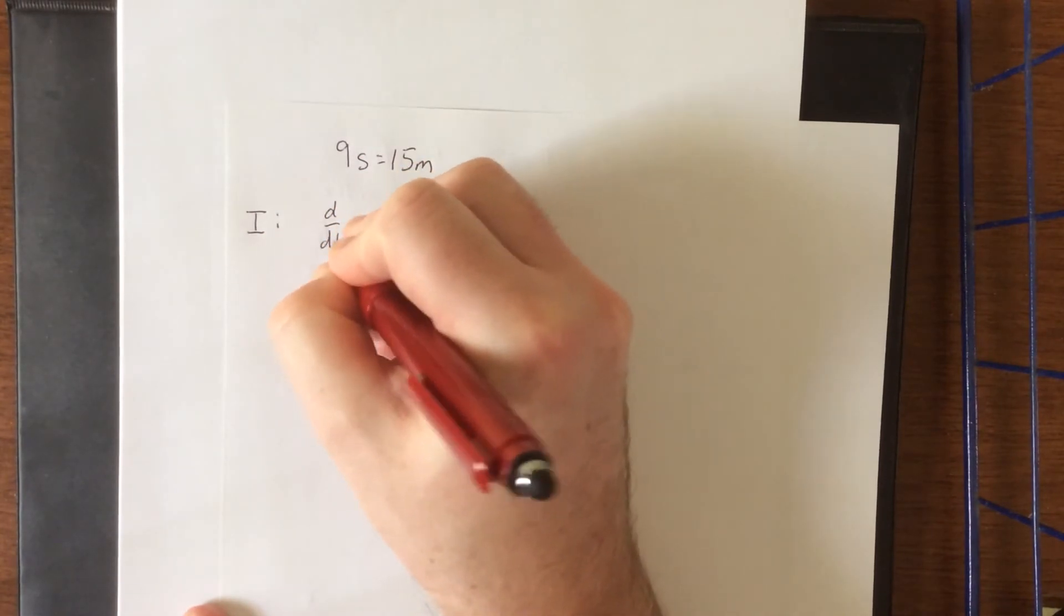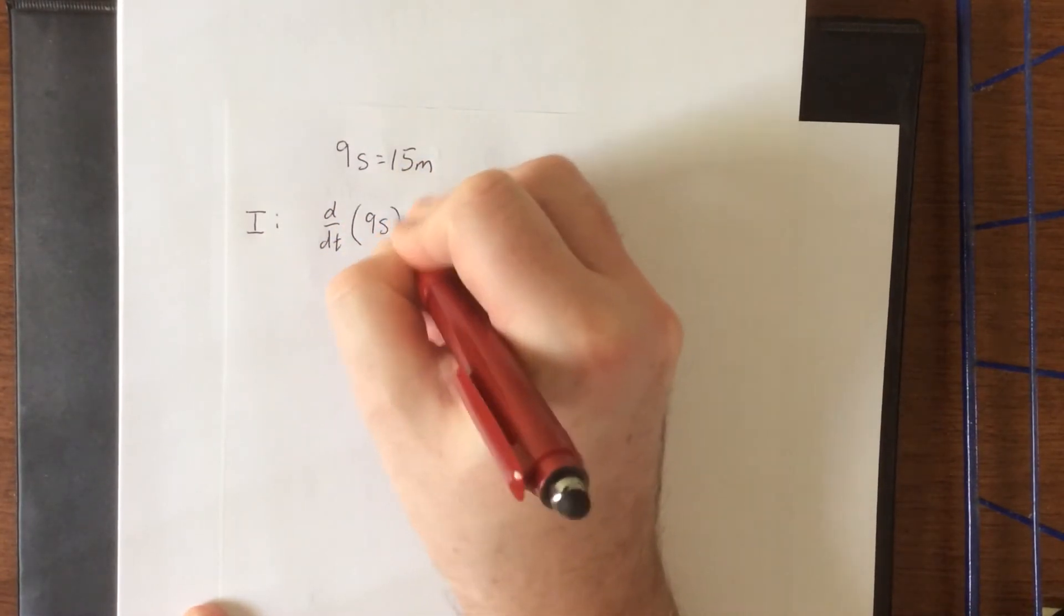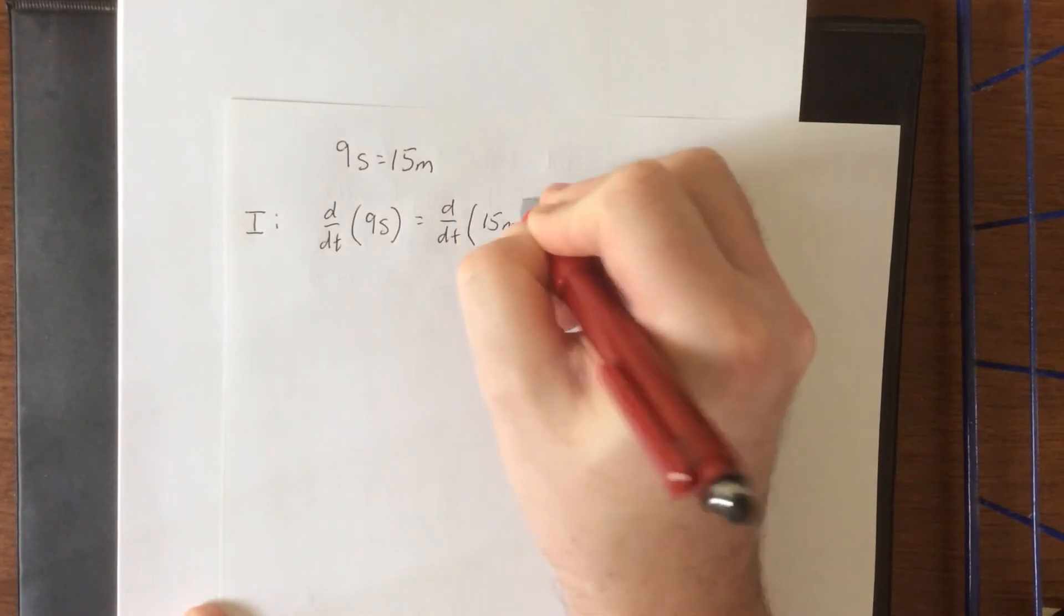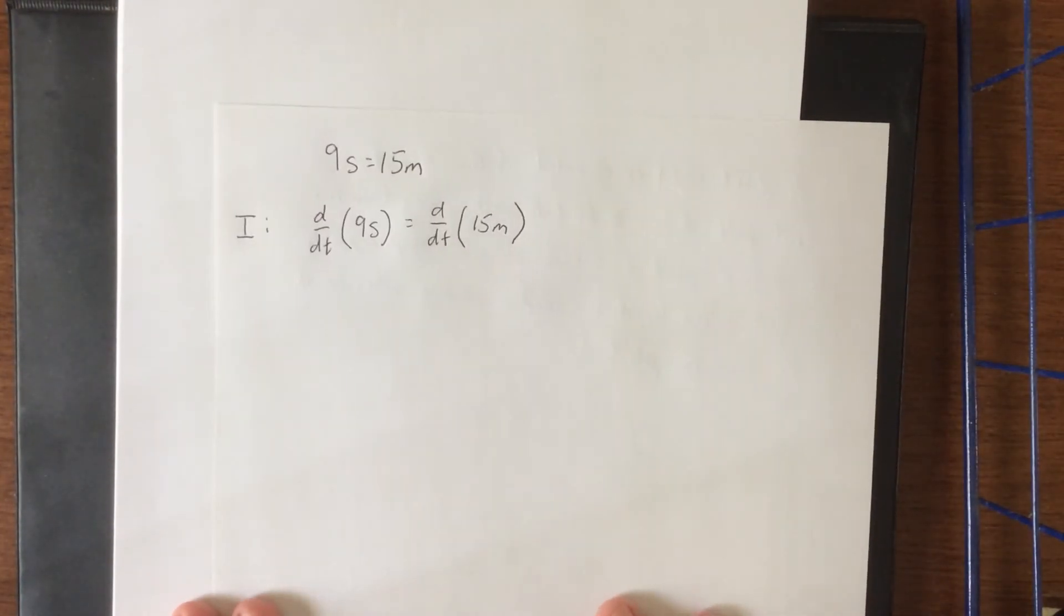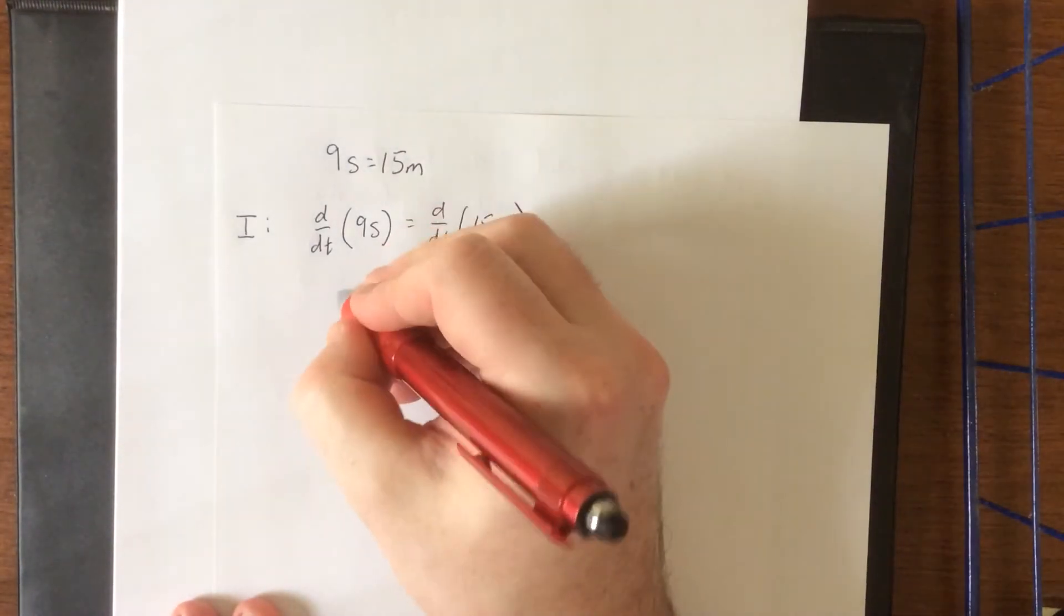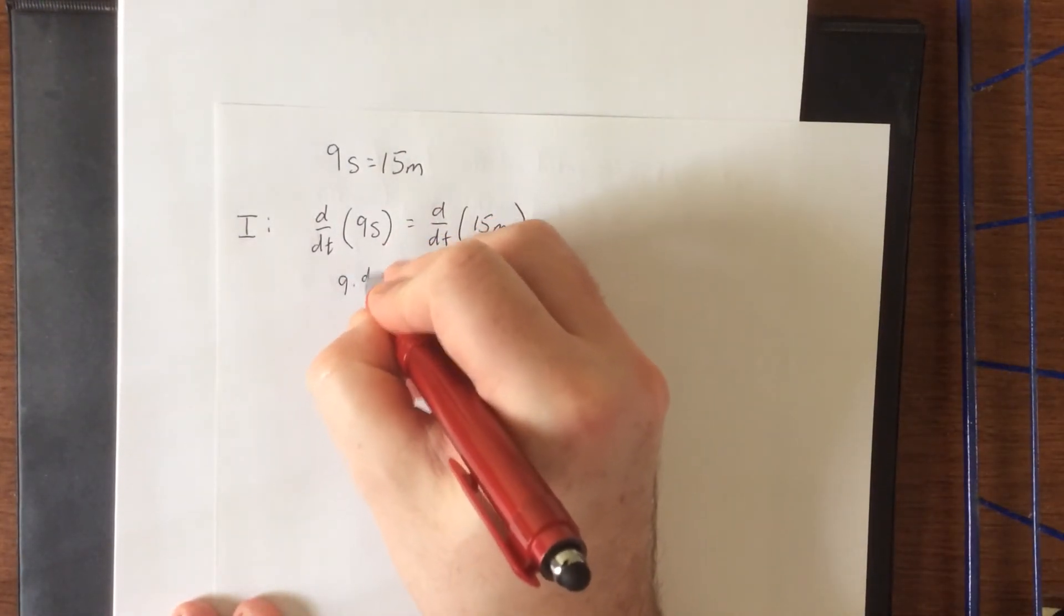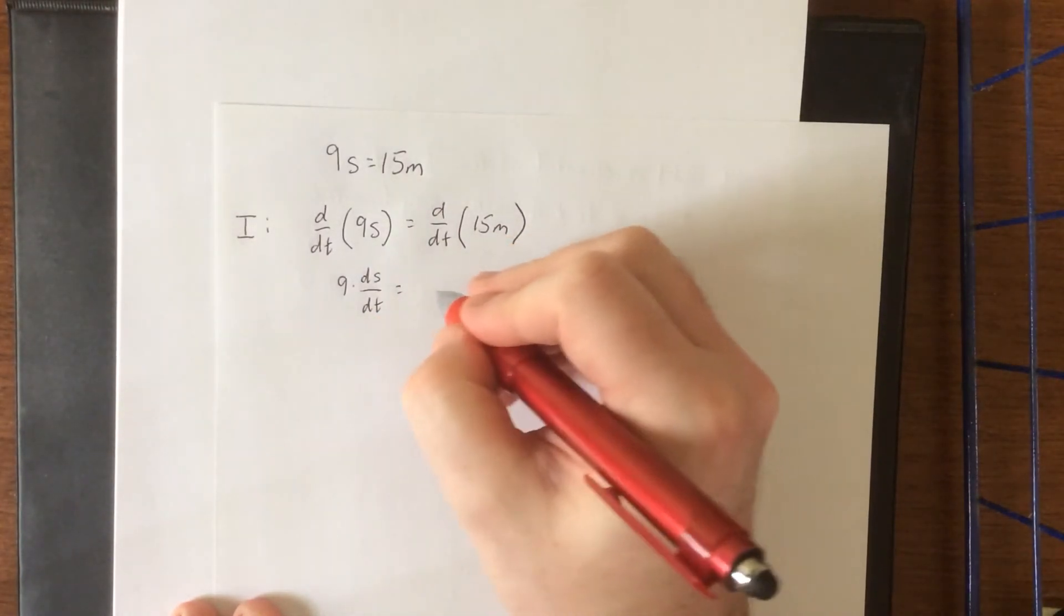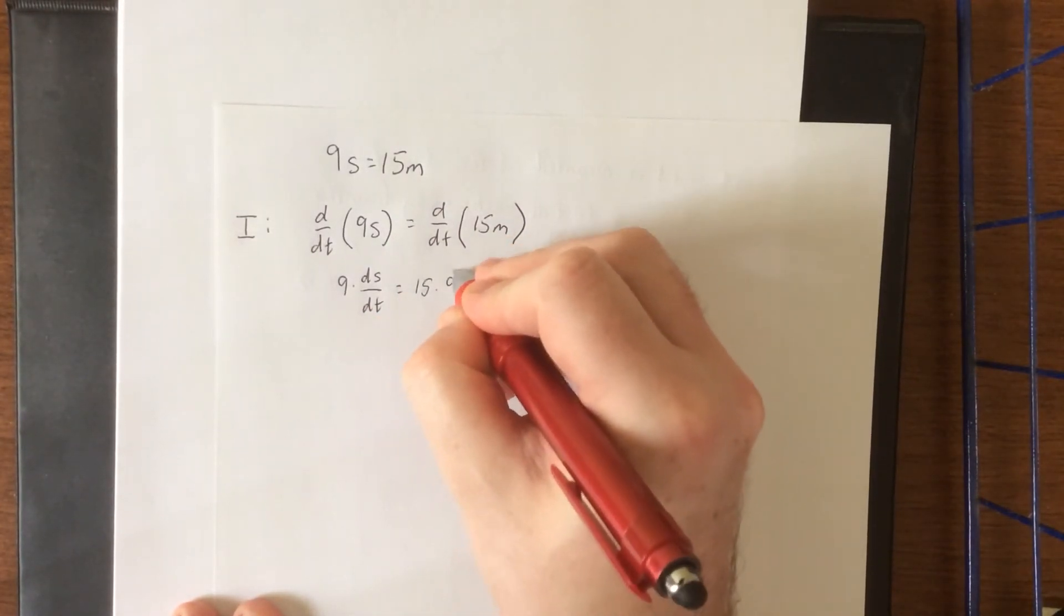So we're going to differentiate with respect to time, 9S. And we're going to differentiate with respect to time, 15M. Now, both of these are simply linear terms, but they do both vary over the course of time. So we'll call this 9 times dS/dt is equal to 15 times dM/dt.